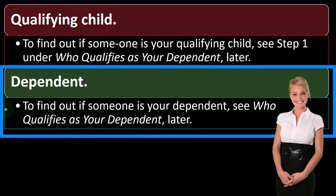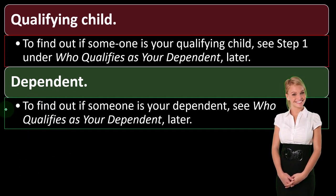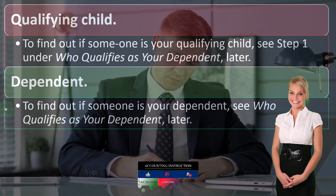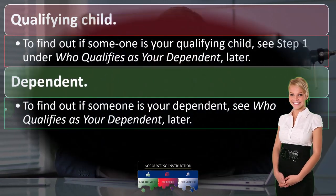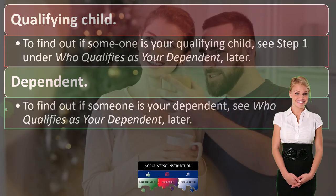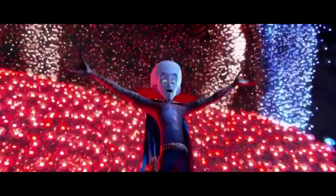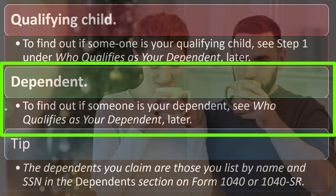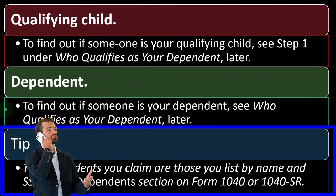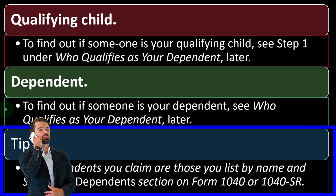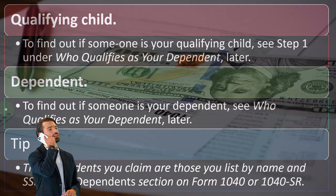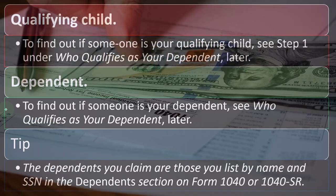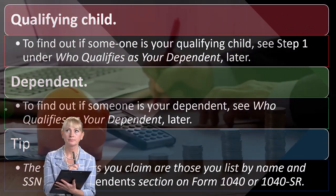Some of this is intertwined — we're looking at filing statuses, but dependents may be involved in determining filing status. If a dependent is required to determine the filing status, we've got to dive into what is a dependent and who qualifies, which we'll cover in a future presentation. The dependents you claim are those you list by name and Social Security Number (SSN) in the dependents section of Form 1040 or 1040-SR.